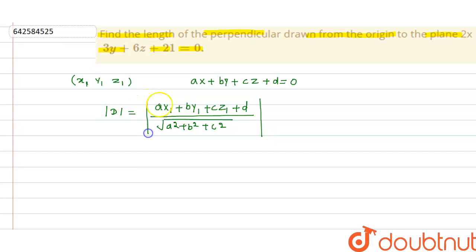Now similarly in our question, we are asked that the distance from the origin to the plane 2x plus 3y plus 6z plus 21 is equal to 0, so distance capital D can be given as what?